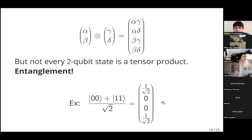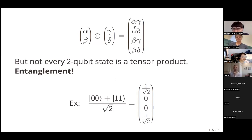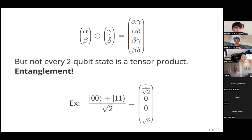An example of an entangled state is (|00⟩ + |11⟩)/√2 — a superposition of the first qubit being zero and second being zero, and first qubit being one and second being one. Can you prove you cannot express this as a product (α, β) ⊗ (γ, δ)? The argument: α·δ must be zero, so one of them is zero; and β·γ must be zero, so one of them is zero. But β·δ is nonzero, so both β and δ must be nonzero, and α·γ is nonzero, so both α and γ must be nonzero — giving a contradiction.